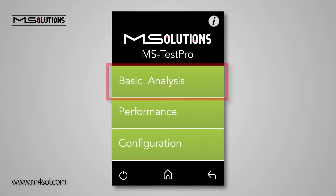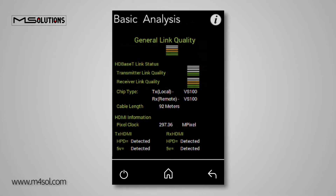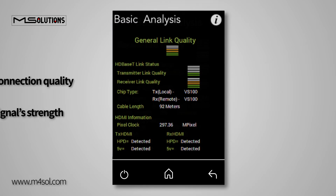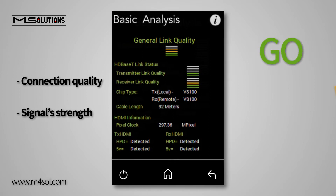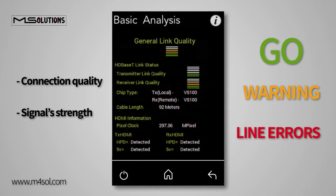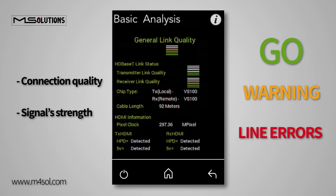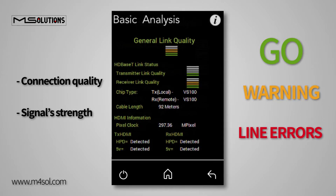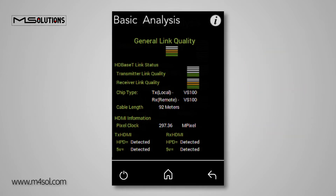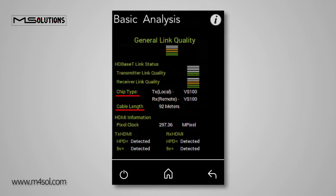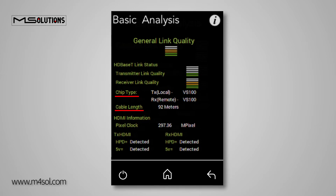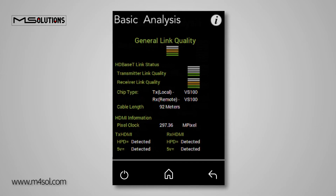After installing the HDBaseT cable, start with the Basic menu. The Basic screen helps you determine the quality of the connection and the signal strength. Just like your traffic light, green is a go, while yellow is a warning, and red lets you know that there is a high probability of line errors that should be handled before you leave the site. In this screen, signal quality levels are presented for both the transmit and the receive ends, each with their own parameters. You can see the HDBaseT chip type used, the cable length accurate to within 10%, and the frequency of the clock that is forwarded to the device. These are the basic data of the system.